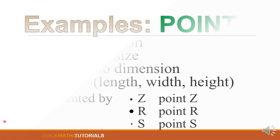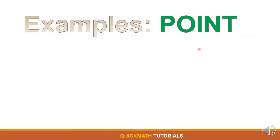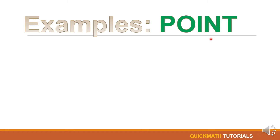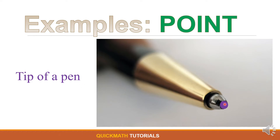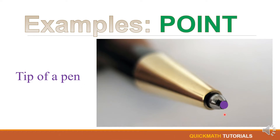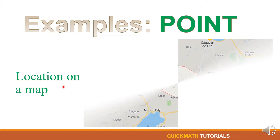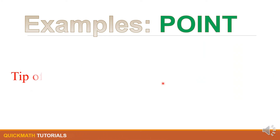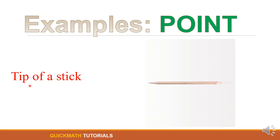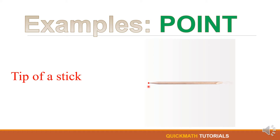In drawing a point, you can use a small dot or a bigger dot. Now let's look at some examples of a point seen in real life. First, we have the tip of a pen. Second, a location on a map — for example, the location of a city. And last, the tip of a stick. These are all examples of a point in real life.